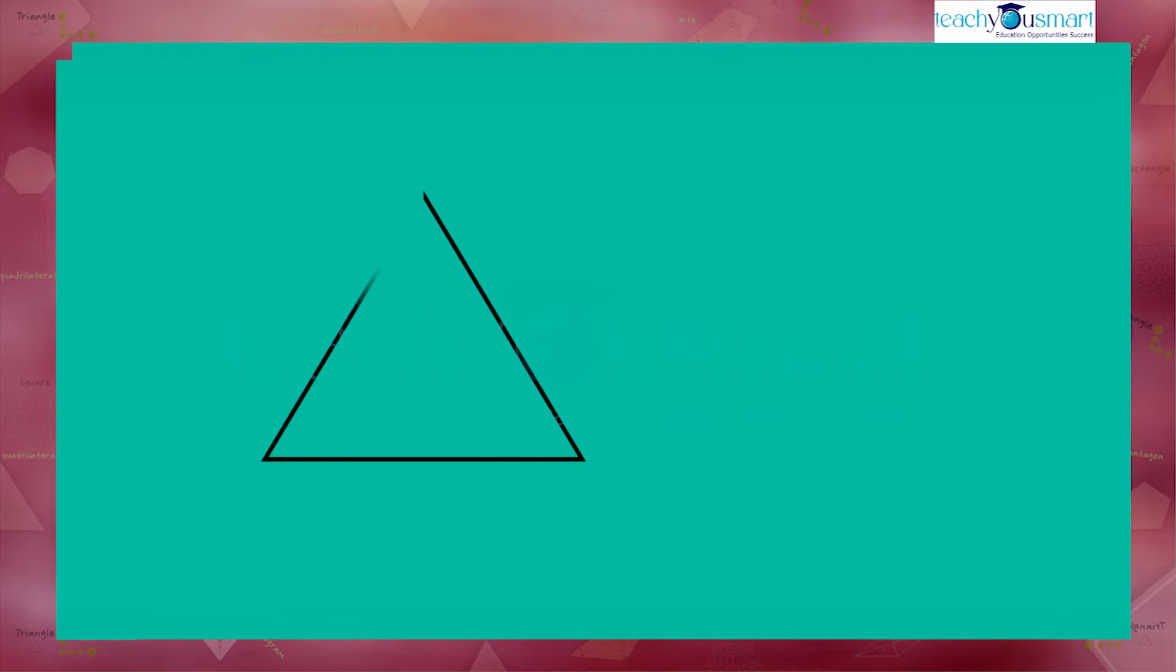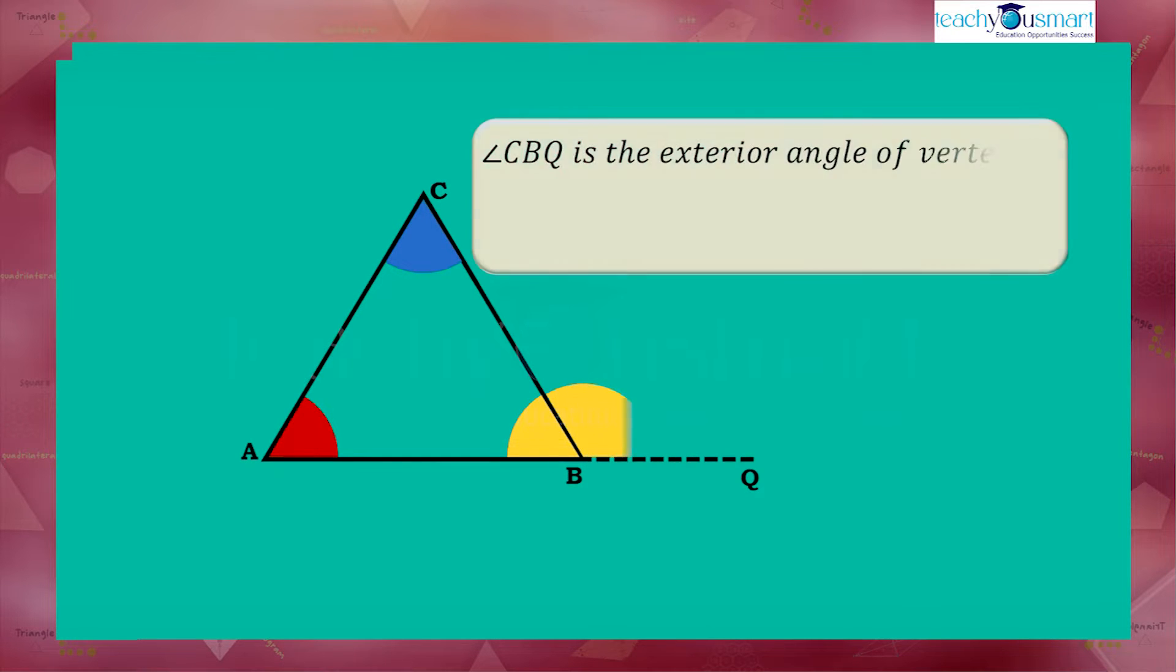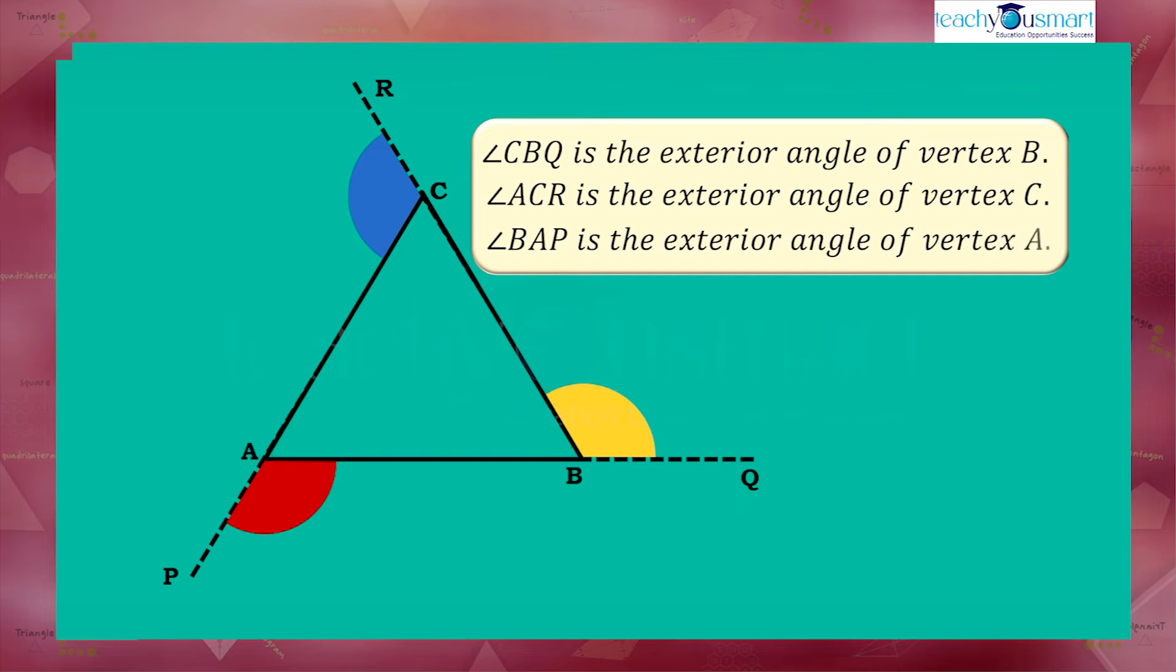Consider this triangle ABC. Angle CBQ is the exterior angle of vertex B. Similarly, angle ACR is the exterior angle at vertex C, and angle BAP is the exterior angle at vertex A.